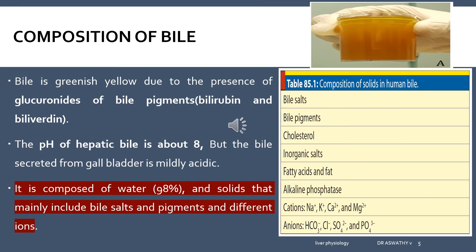The composition of bile is very important. The color of bile is greenish yellow or golden yellow, because of the presence of bile pigments. The pH of hepatic bile is 8, but after storage in the gallbladder the bile becomes slightly acidic, with pH reaching 7. Bile is composed of 98% water and solids including bile salts and pigments and different ions.